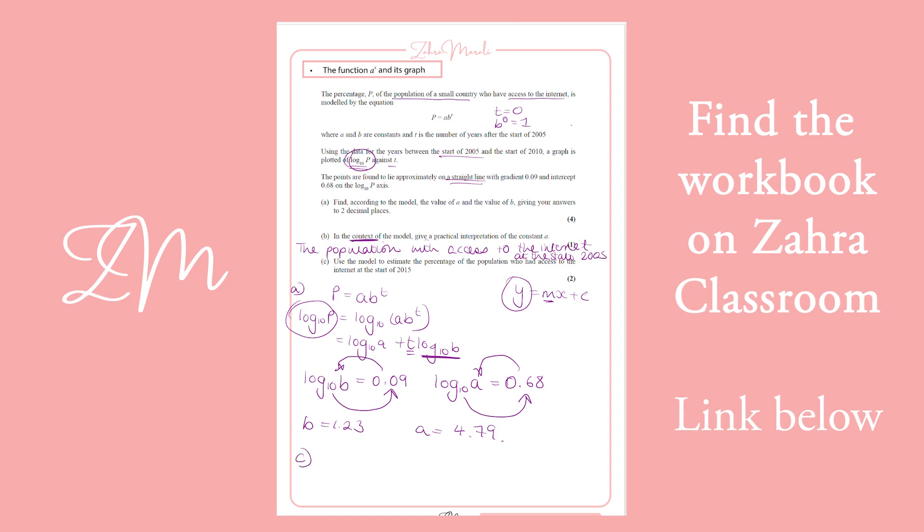And then part C says, use the model to estimate the percentage of the population who had it at the start of 2015. So that's in 10 years' time. So we said A was 4.79 times B to the T, so it would be 1.23 to the power of 10. And we're estimating, so it's the percentage of population. That's what the question's about. And it equals 38. So that's how you would do that question.